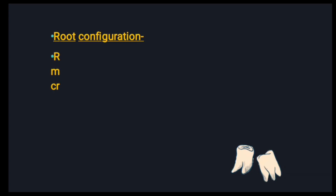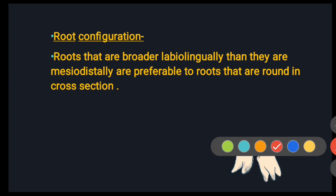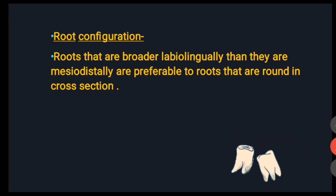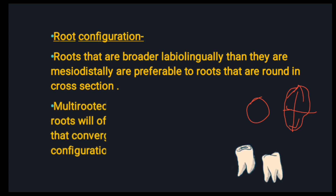For root configuration, roots that are broader labiolingually than they are mesiodistally are preferable — that is a 1:2 ratio. If the roots are broader labiolingually than mesiodistally, these kinds of roots are preferred over a particularly rounded root, as this provides more retention.